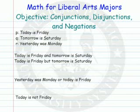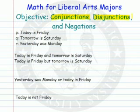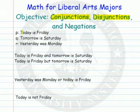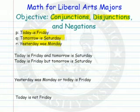In this video, we're going to look at conjunctions and disjunctions. These are compound statements that are made of component parts, and they're connectors or modifiers that connect them. We have three statements: today is Friday, tomorrow is Saturday, yesterday is Monday. These are simple statements. We're going to put these component parts together with connectors to make compound sentences.